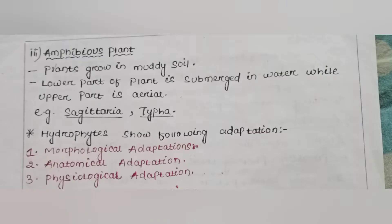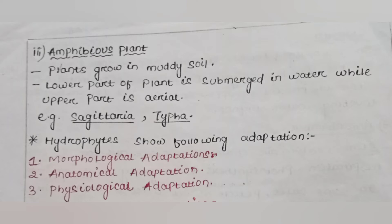The third category is amphibious plants, which grow in moist soil where the lower plant part is submerged in water and the upper part is aerial — that means above the water. Examples of amphibious plants include Sagittaria and Typha.